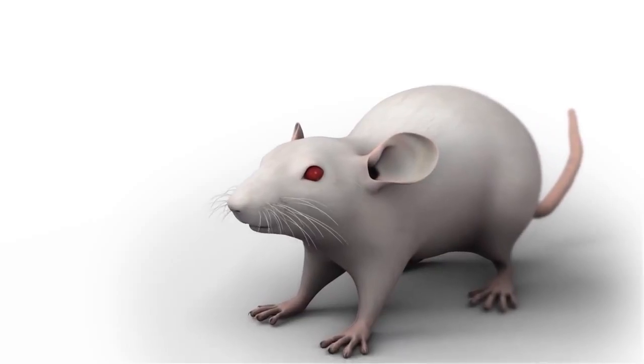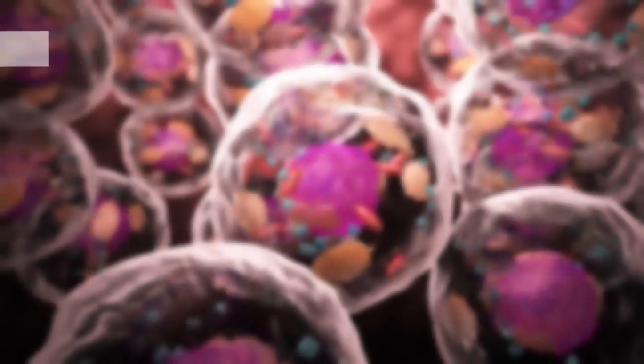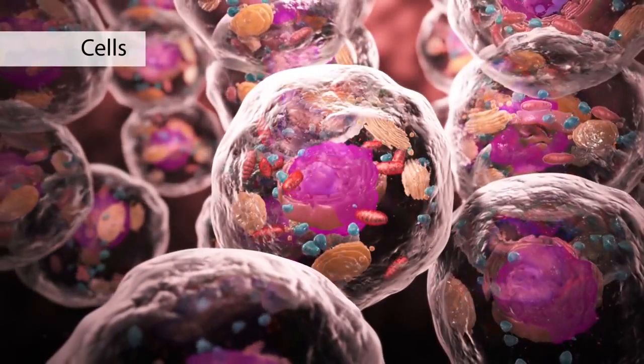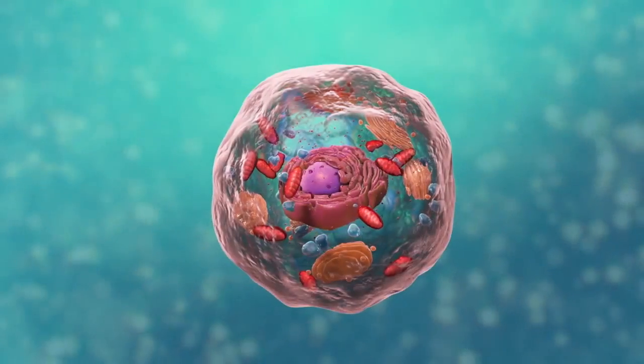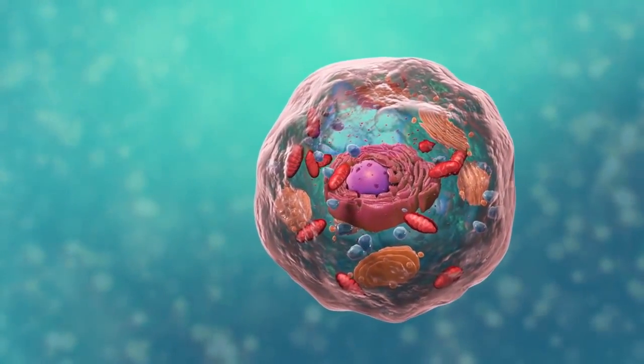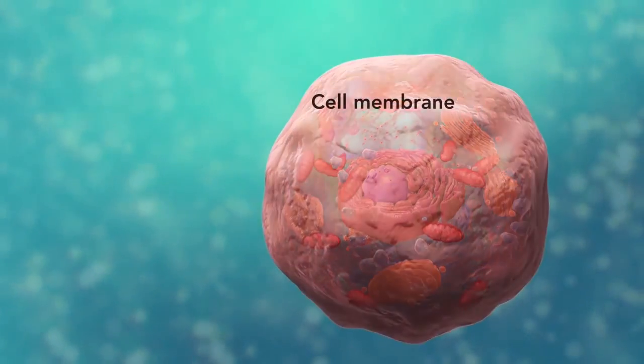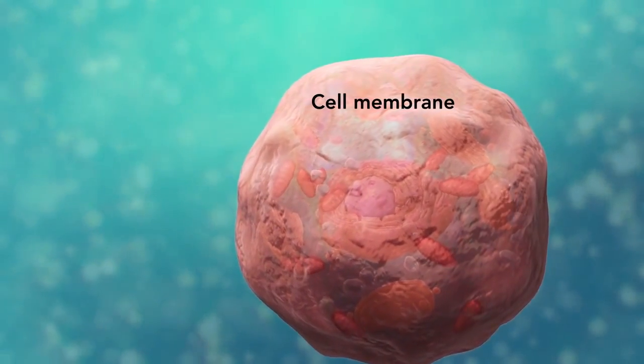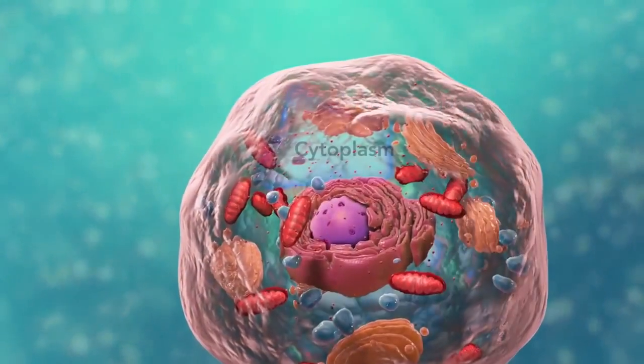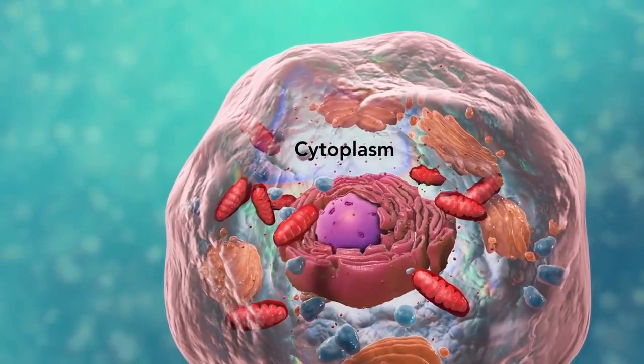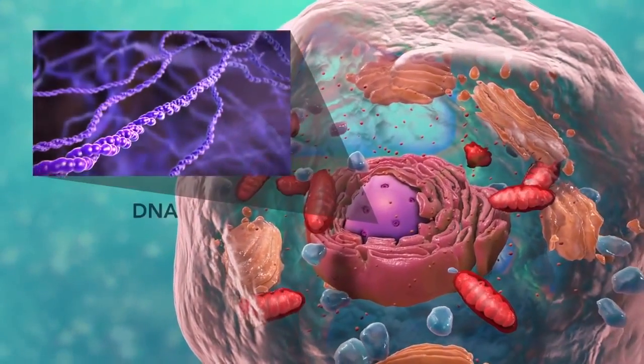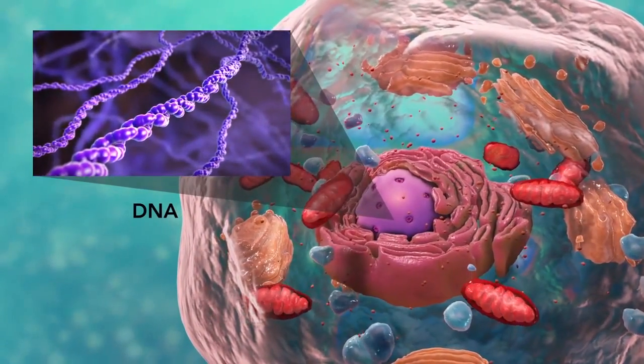Cells are the smallest living units of an organism. All cells have three things in common no matter what type of cell they are. All cells have a cell membrane which separates the inside of the cell from its environment, cytoplasm which is a jelly-like fluid, and DNA which is the cell's genetic material.